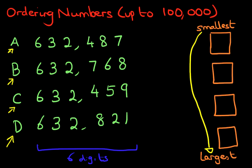We're going to start on the left hand side and we're just going to circle all the numbers, just so we can highlight what you should be looking at. Now have a look at each of these numbers — they are all six. All of them are the same, so we cannot determine which is larger and which is smaller by looking at the hundred thousands.